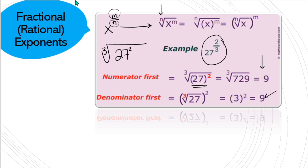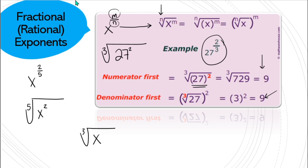For x to the power of 2/5, the numerator stays with the base and the denominator becomes the degree of the radical. And if we go backwards — say we have the cube root of x — that's x to the power of 1/3, since the power of x is 1 (the numerator) and the degree of the radical is 3 (the denominator).